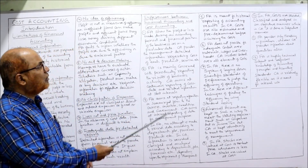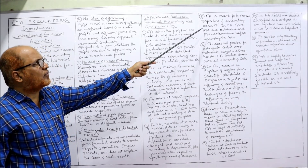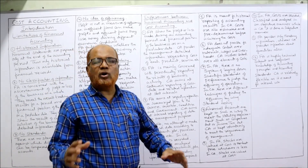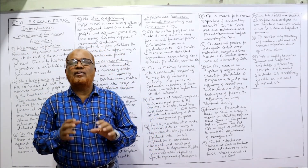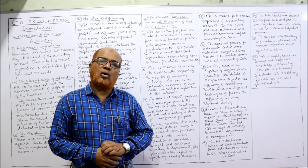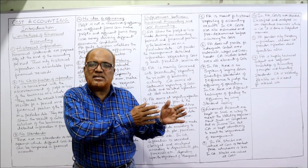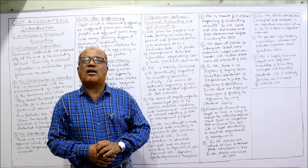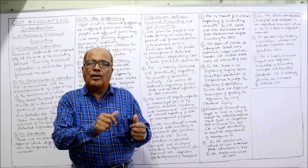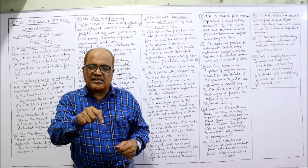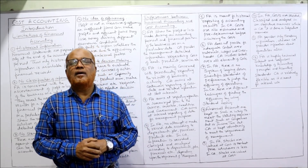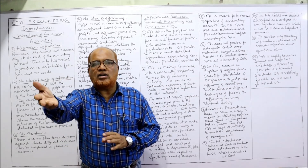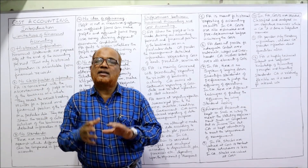Financial accounting is meant for historical reporting, whereas in cost accounting, costs are estimated and predetermined. Financial accounting records only what happened in the past, whereas cost accounting is concerned not only with the past but also with the present and future — predetermined costs are calculated, determining what the cost will be in the next year.